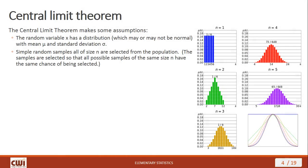The Central Limit Theorem does make some assumptions. First, we're assuming that the random variable x has a distribution — which may or may not be normal — but this distribution has a mean value of mu and a standard deviation value of sigma. Simple random samples of size n are being selected from the population. What we're saying is that the samples are selected so that all possible samples of the same size have the same chance of being selected.